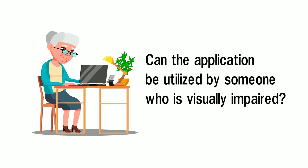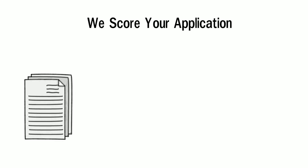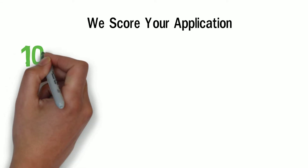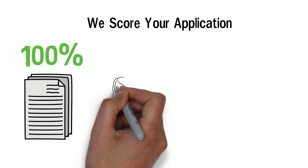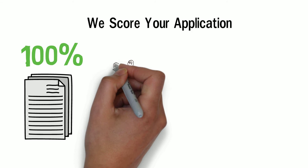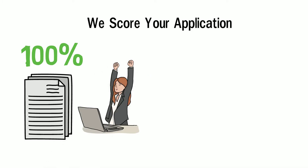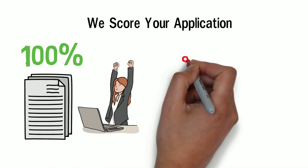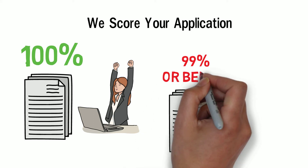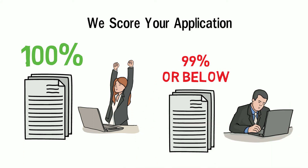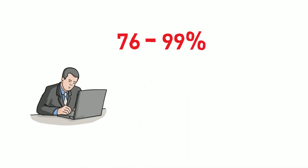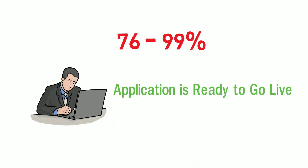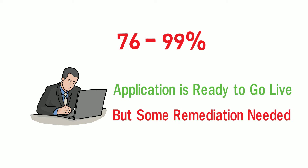After testing is complete, your software application will receive a score. If your score is 100%, CMS considers the application to be Section 508 compliant and needs no further review. If your score is 99% or below, then remediation is required. For scores of 76 to 99%, the application is ready to go live, but some remediation and a remediation plan is required for any outstanding issues.